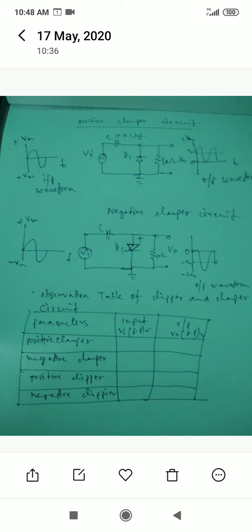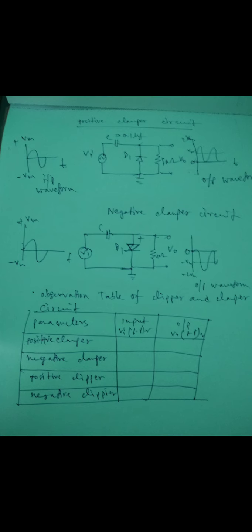A positive Clamping circuit is one that consists of a diode, resistor, capacitor that shifts the output signal to the positive portion of the input signal. This is the figure of positive Clamper circuit. This is the input signal. This is output.